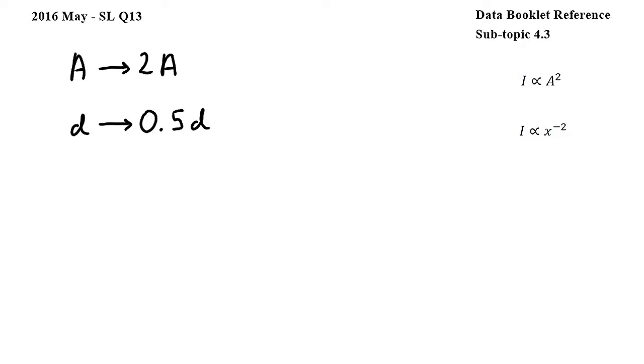In this question we have to decide how the intensity of a sound wave changes as its amplitude is doubled and the distance between the source and the point where the wave is detected is halved.